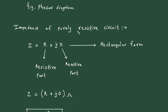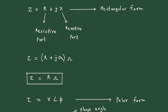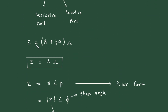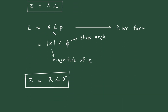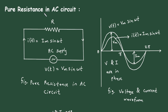Impedance of a purely resistive circuit is represented by Z = R + jX, where R is the resistive part, X is the reactive part, and j = √(−1) — this is the rectangular form. The reactive part X = 0 for this circuit. The unit of impedance is Ohm, so Z = R Ohm. In polar form, Z = R∠φ, where R is the magnitude of Z and φ is the phase angle. Since magnitude of Z = R and φ = 0°, we get Z = R∠0° Ohm.